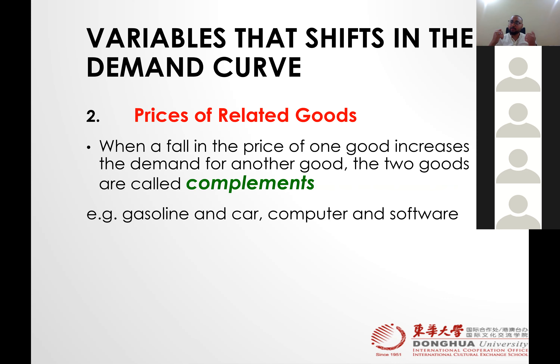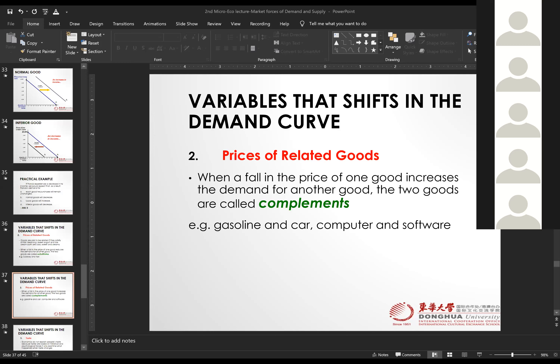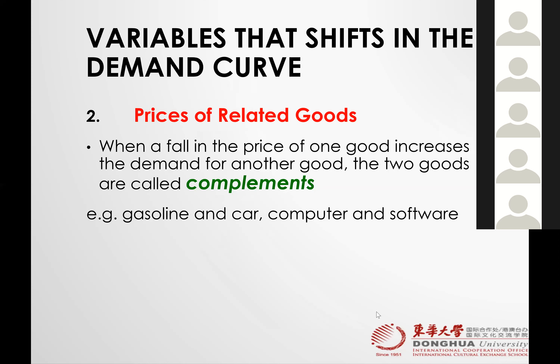If the price of product A decreases, it causes the quantity of product B to increase — the opposite applies too. Let me do it again here so you understand that. Let's talk about gasoline and cars.